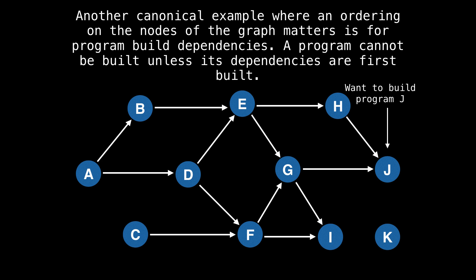One possible ordering might be to start by building A, then building C, B, D, F, E, G, H, and then J. Notice that there are unused dependencies in this case, and that will happen from time to time, which is fine.